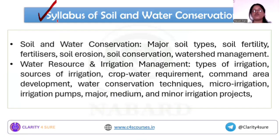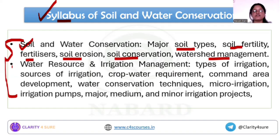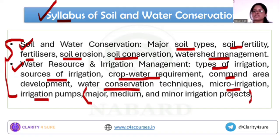Before going forward, let's discuss the syllabus for this part. This is the syllabus released by NABARD in its last official notification. The syllabus includes major soil types, soil fertility, fertilizers, soil erosion, soil conservation, and watershed management. Under water resource and irrigation management: types of irrigation, sources of irrigation, crop water requirement, command area development, water conservation techniques, micro irrigation, irrigation pumps, and major, medium and minor irrigation projects.